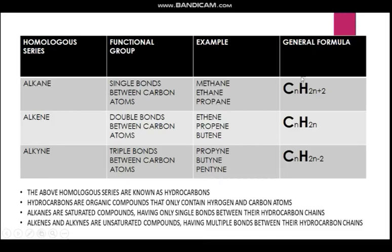The general formula for alkanes is CnH2n+2. For example, if we have two carbon atoms, then the number of hydrogen atoms is 6, because 2 times 2 is 4, plus 2 equals 6. The general formula tells you the proportion of the elements in that particular compound.